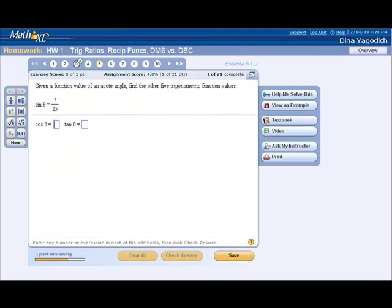In this example however, you're not given a right triangle, instead you're given one of the trig functions and the ratio associated with it. For instance, this problem gives us sine of theta equals 7 over 25, and we're supposed to find cosine theta and tan of theta.